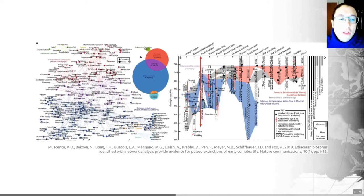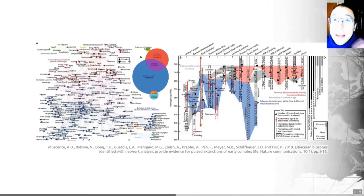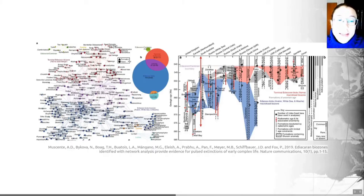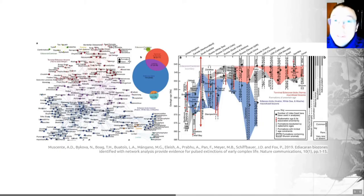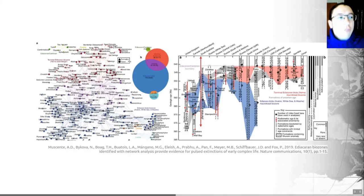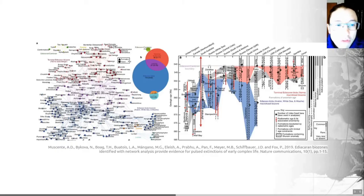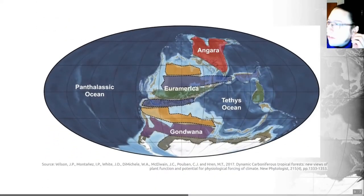Through this network analysis, the authors demonstrated that the Ediacaran system contained a number of environmental and ecological biotypes — equivalents of our provinces — as well as time-based assemblage biozones shown in blue and red on the right. This analysis revealed evolutionary and ecological changes leading to the Ediacaran–Cambrian transition and presented evidence for extinction events at that time — a good example of quantitative approaches in modern paleobiogeography.